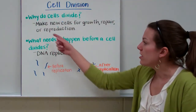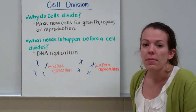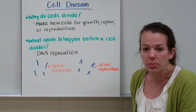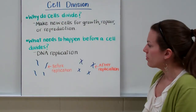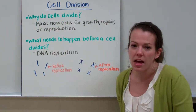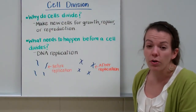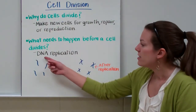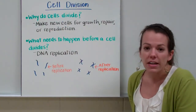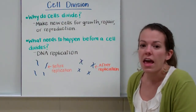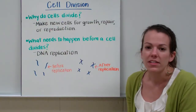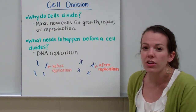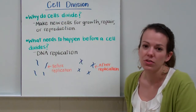When a cell needs to reproduce, your body makes eggs and sperm in order to help us sexually reproduce. There are a few things that need to happen before a cell divides — in particular, we're going to talk about DNA replication. DNA replication is when a cell makes a new copy of its DNA. If you want to learn more, you can see the DNA replication video.